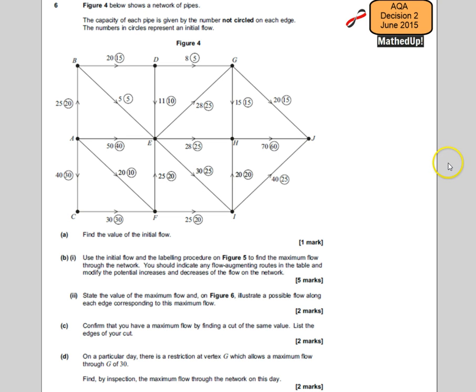Hi, this is question 6 in the AQA Decision 2 June 2015 exam paper. Figure 4 below shows a network of pipes. The capacity of each pipe is given by the number not circled on each edge. For example, the capacity of pipe AB is 25.